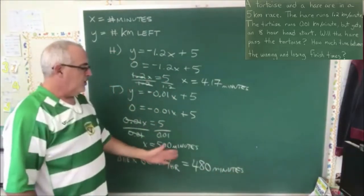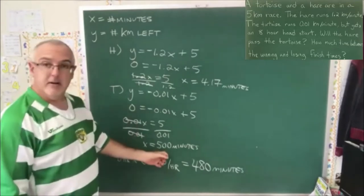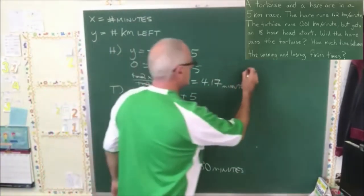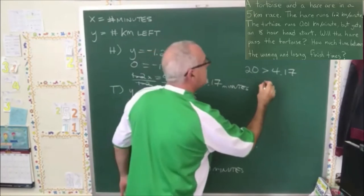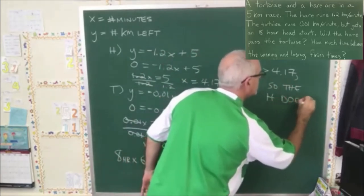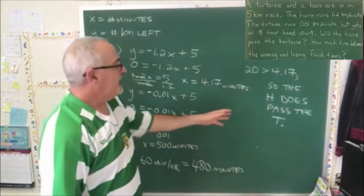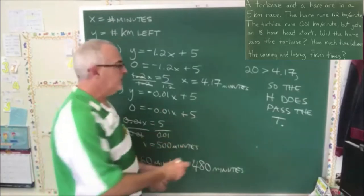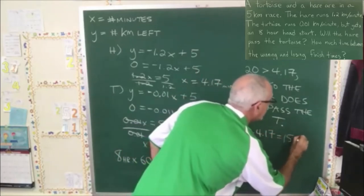The tortoise runs for 480 minutes before the hare starts, and then 20 minutes later the tortoise crosses the finish line. But the hare crossed it after only 4.17 minutes. So since 20 is greater than 4.17, the hare does pass the tortoise. We've answered the first part of the question. For the second part — how many minutes faster does the winner cross the finish line — we do 20 minus 4.17, which is 15.83 minutes.